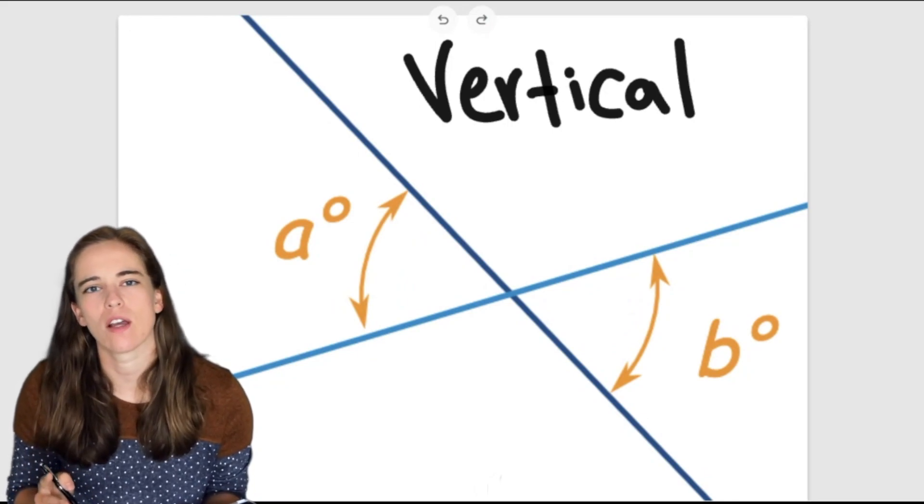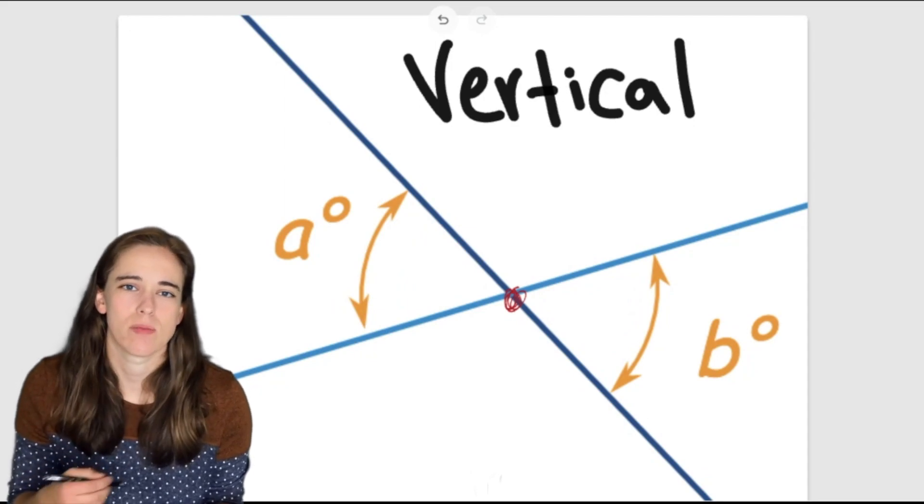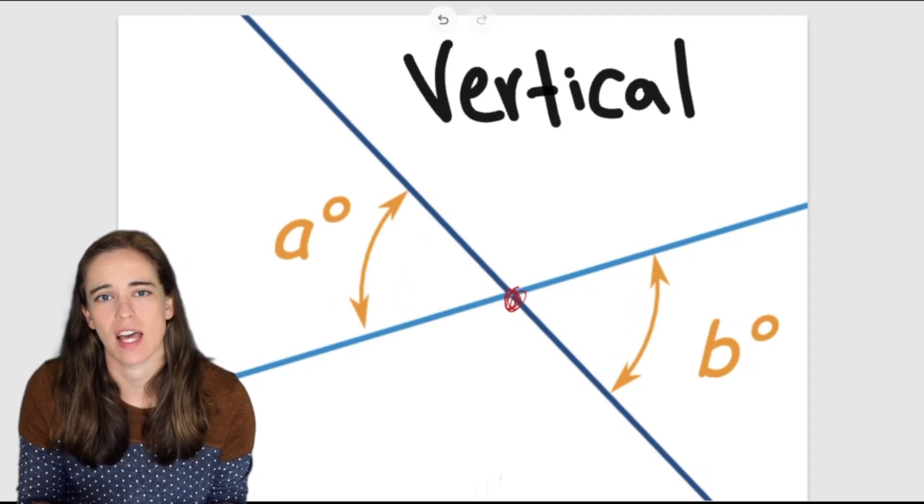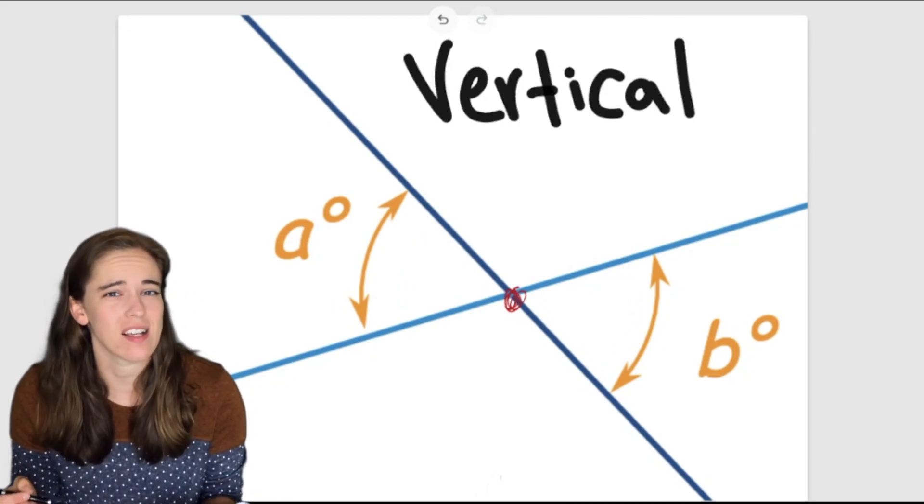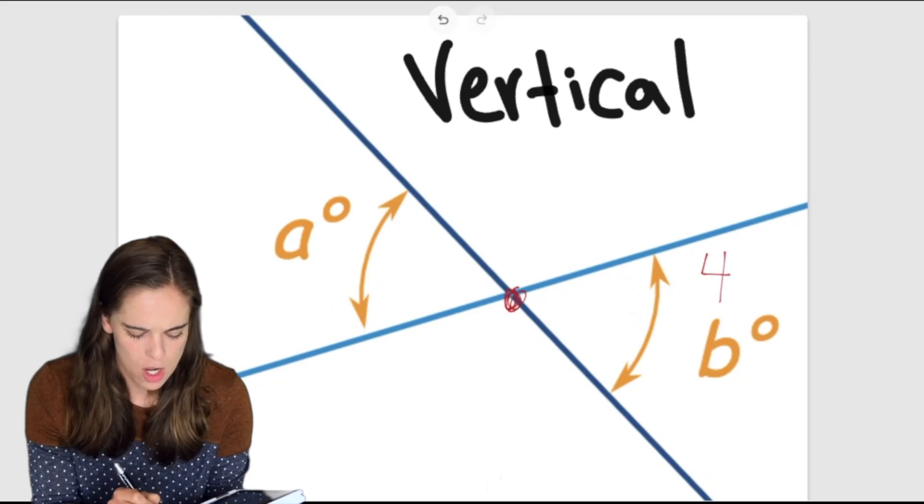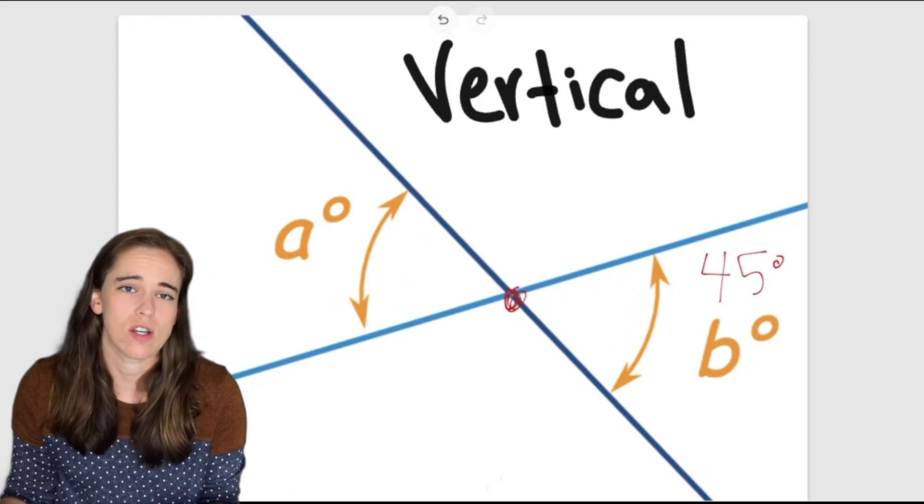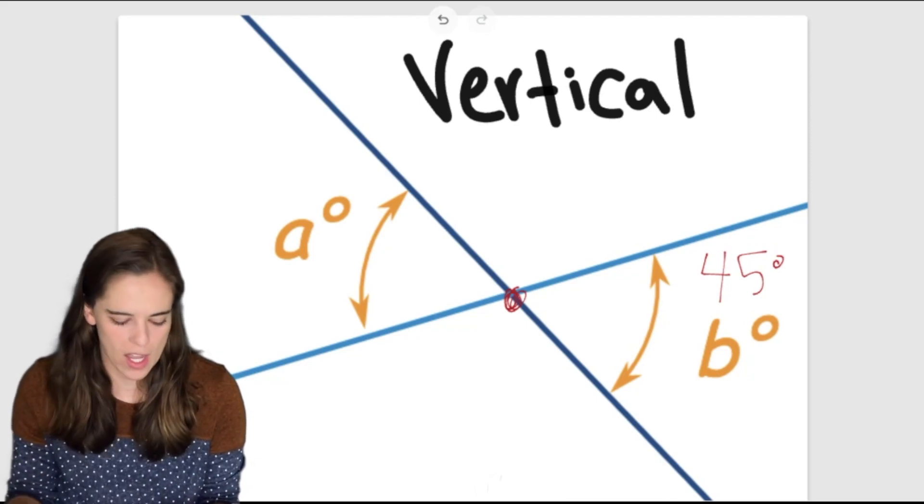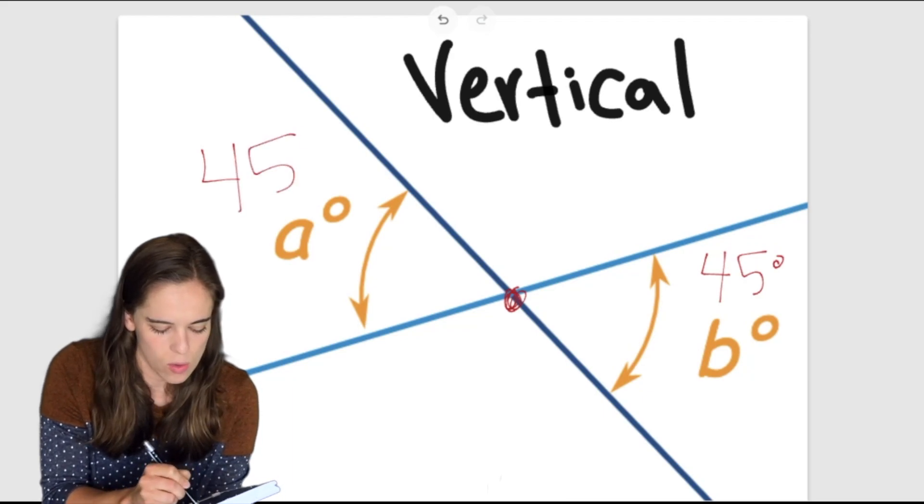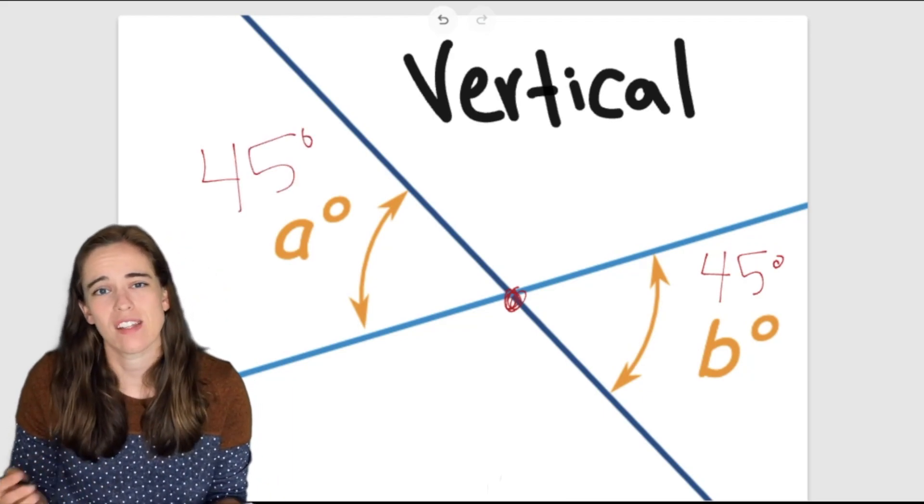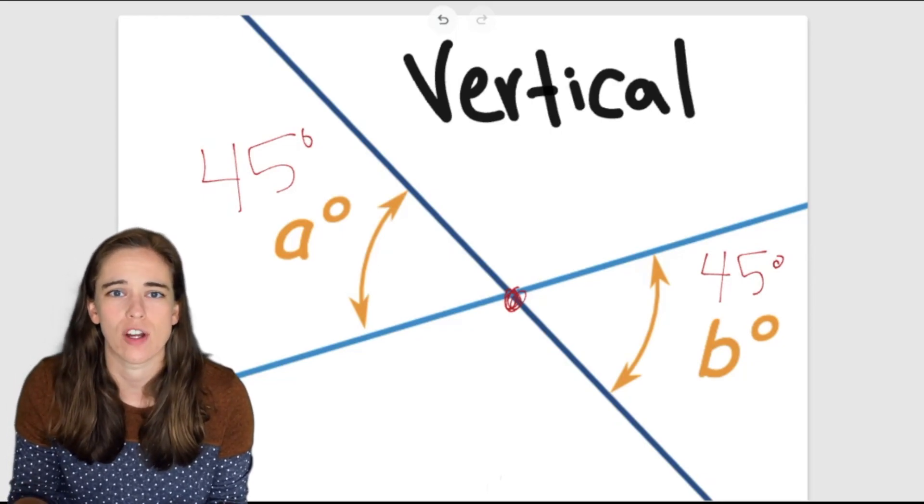And our final angle relationship for today are our vertical angles. Vertical angles are two angles that share a vertex in the middle but they're across from each other so they're not adjacent they don't share a leg but they are really cool because they're actually the exact same measure. So if I told you that angle B over here was equal to 45 degrees well if these two angles angle A and angle B are vertical angles and angle B is 45 degrees that means that angle A is also 45 degrees. So that's going to be really key coming up when we start using our angle relationships to solve for unknown variables.